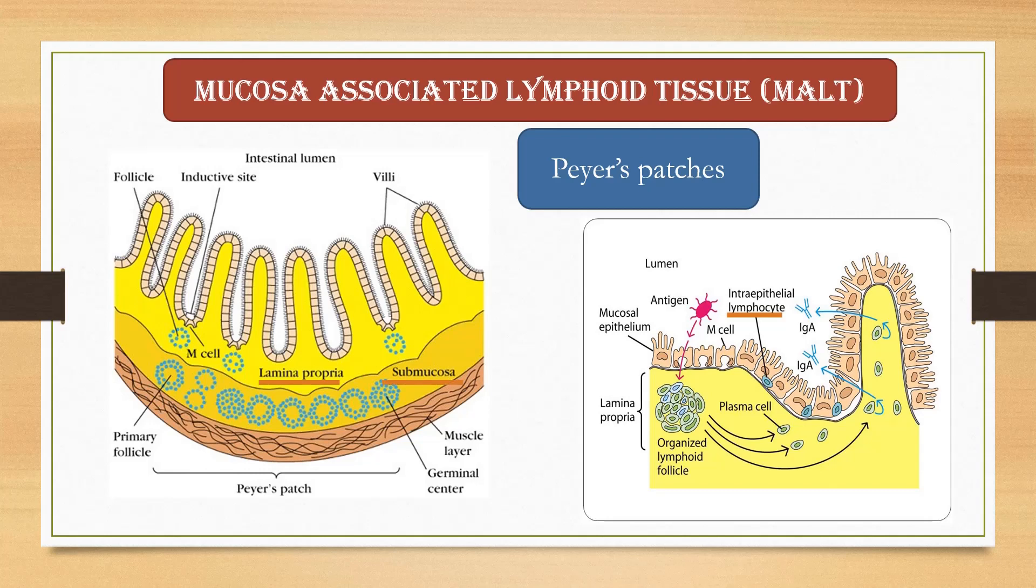Submucosal layer beneath the lamina propria contains primary follicles, which may develop into secondary follicles.